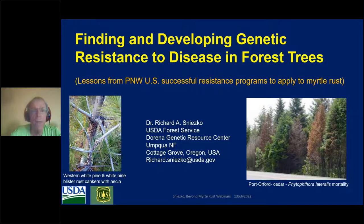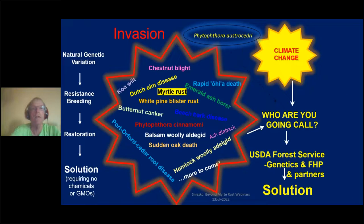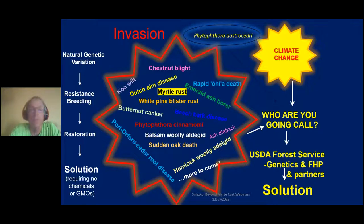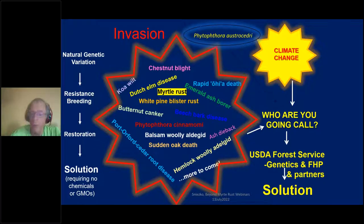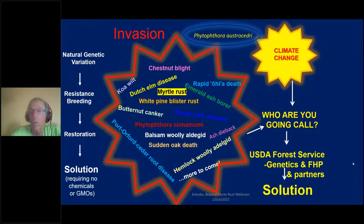I'm with the USDA Forest Service and my email is on the screen if you want to contact me. We all know that worldwide there's been an array of non-native invasive pathogens or pests affecting our forest tree species. In some cases they have an extremely high kill rate — 90 percent or more. Myrtle Rust is just one of them. In the US, several groups work with developing disease resistance, and one of the big ones is the USDA Forest Service.